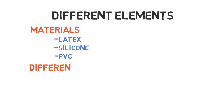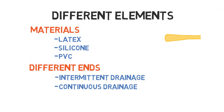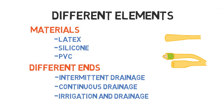The next question to ask yourself is: what is the purpose of the catheter? If you're just doing intermittent drainage of the bladder, you want a one-way catheter. If you need an indwelling or continuous drainage system, the catheter will require two ports — a drainage port and a balloon port. The balloon port allows water to be inserted, filling the balloon and keeping the catheter in place. If the patient also requires irrigation alongside continuous drainage, they would most likely need a large French three-way catheter, which includes a balloon port, a drainage port, and an irrigation port.